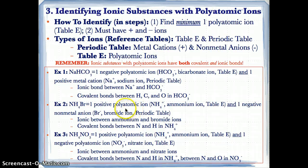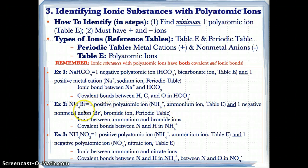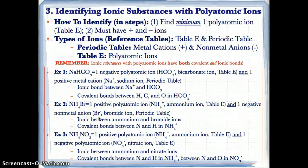Example two: NH4Br. The positive ion is the polyatomic ion NH4 plus (ammonium), listed on Table E. The negative ion is Br minus (bromide), a nonmetal anion from the periodic table with a top oxidation state of negative one. The ionic bond is between ammonium (charge +1) and bromide (charge −1). The covalent bond is between N and H atoms in NH4 plus, the polyatomic ammonium ion, because N and H are both nonmetals.